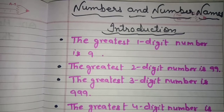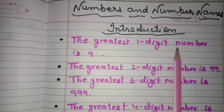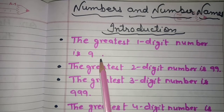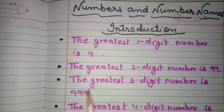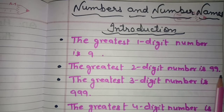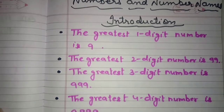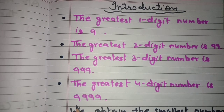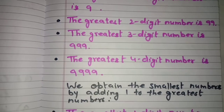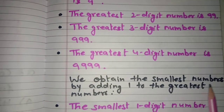Hello everyone, today we will study about numbers and number names, and we will do the introduction part. The greatest one digit number is nine, because nine is the greatest digit. The greatest two digit number is 99, and the greatest three digit number is 999. The greatest four digit number is 9999.